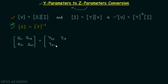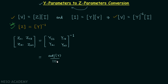The admittance matrix has elements y21 and y22. We are required to find the inverse of this 2×2 matrix. We know the inverse of a matrix is equal to the adjoint of the matrix divided by the determinant of the matrix.